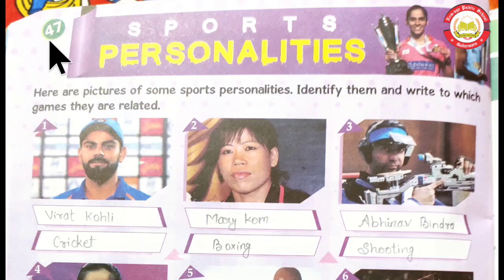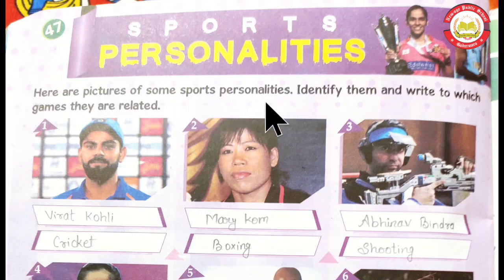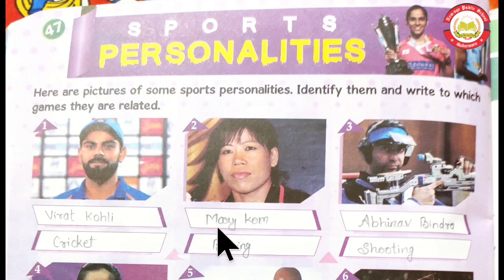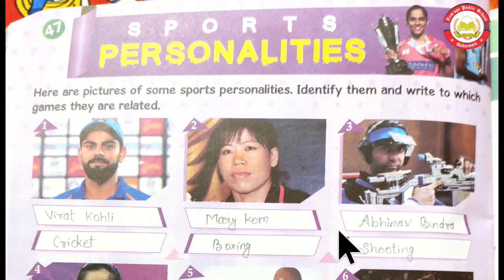Next is Chapter No. 47: Sports Personalities. In this chapter we discuss about famous sports personalities. Here are pictures of some sports personalities — we have to identify them and tell which games they are related to. First one is Virat Kohli, the captain of India, who belongs to Cricket. Second one is Mary Kom, an Indian woman who does Boxing. Third one is Abhinav Bindra, who is related to Shooting.